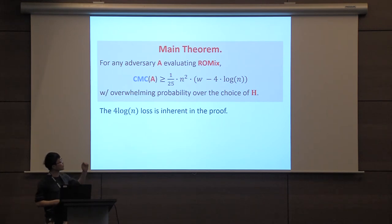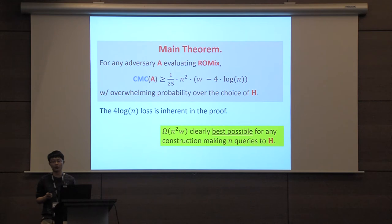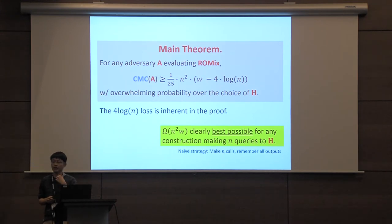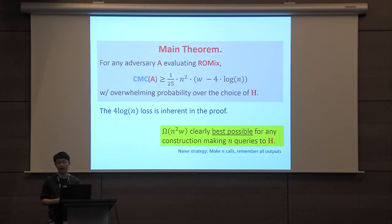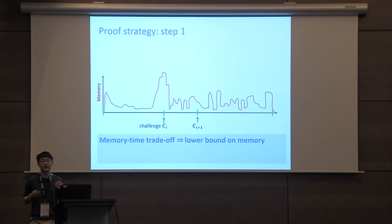Our main theorem shows that for any adversary evaluating RawMix, the CMC is at least around n^2 * w with overwhelming probability. This log term in the bound is inherent in the proof. Note that omega(n^2 * w) is clearly the best possible CMC lower bound for any construction making n queries to the underlying hash function H, as a naive strategy can compute this by making n oracle queries and remembering all answers.